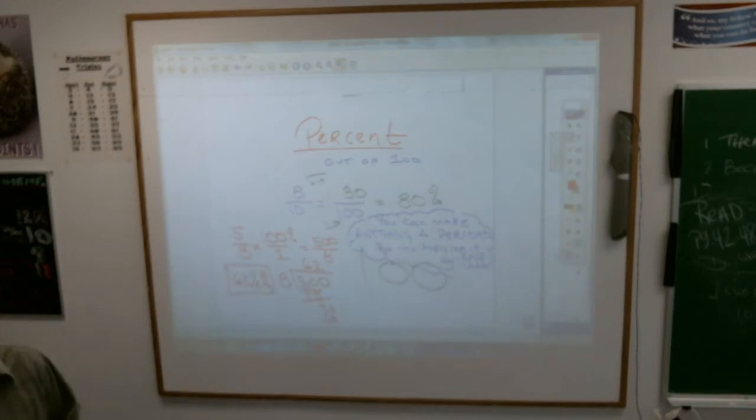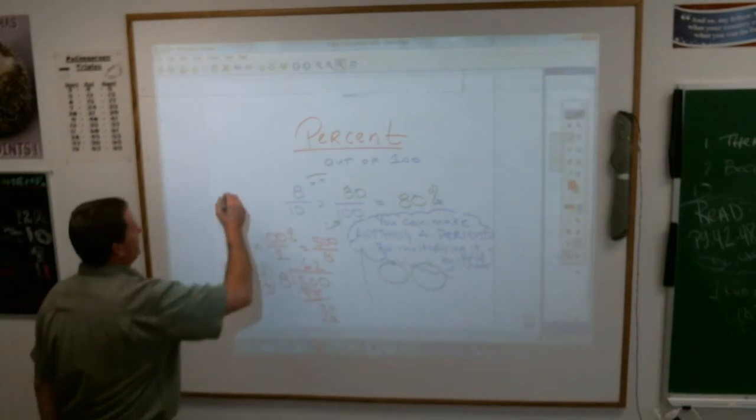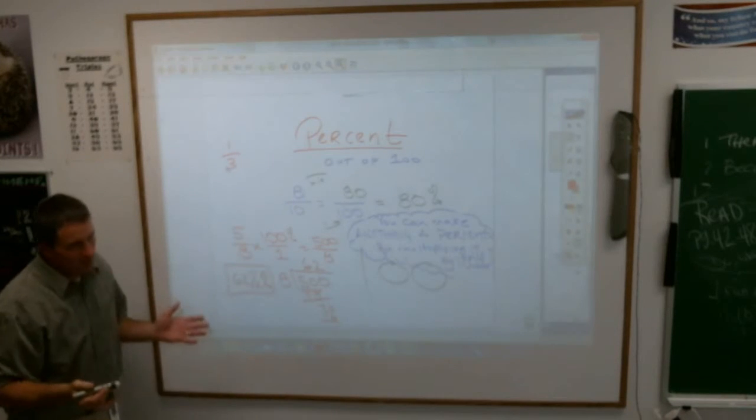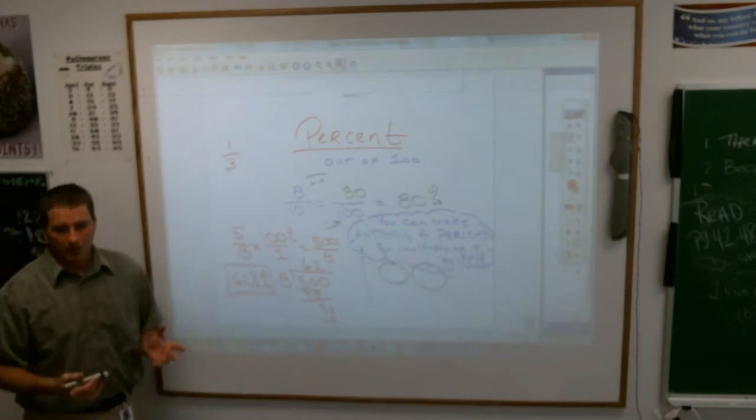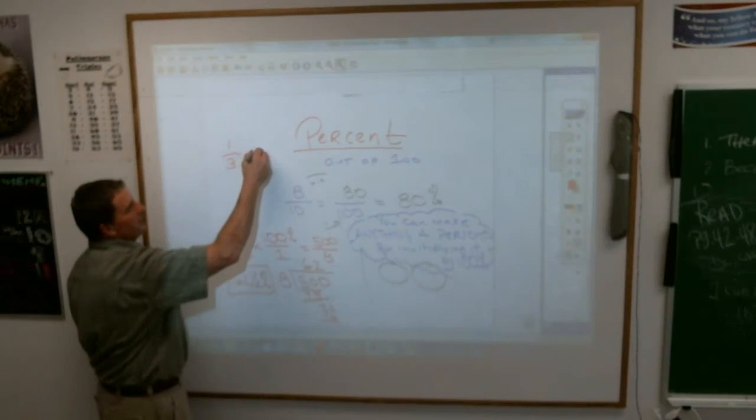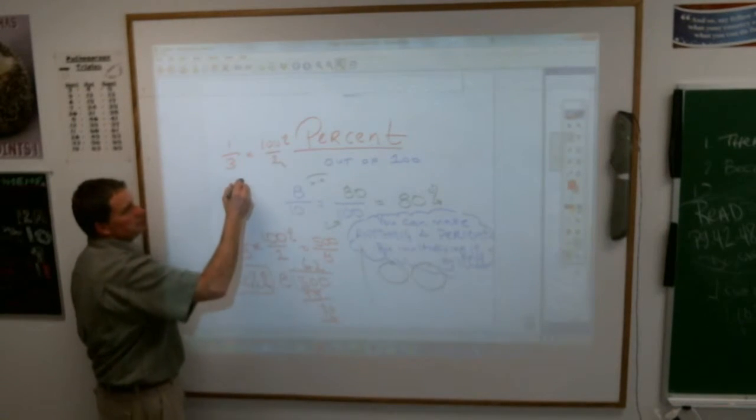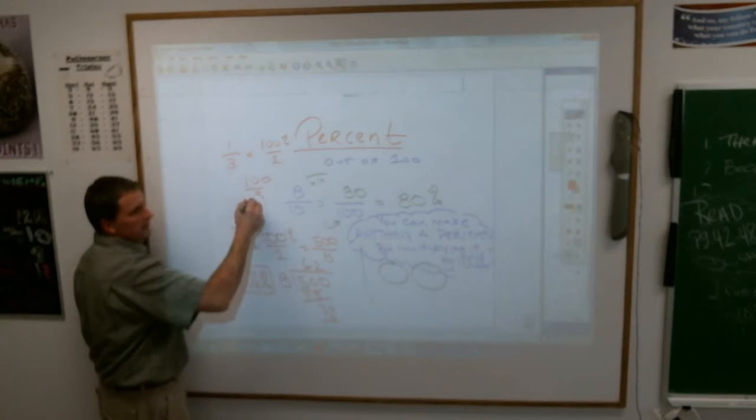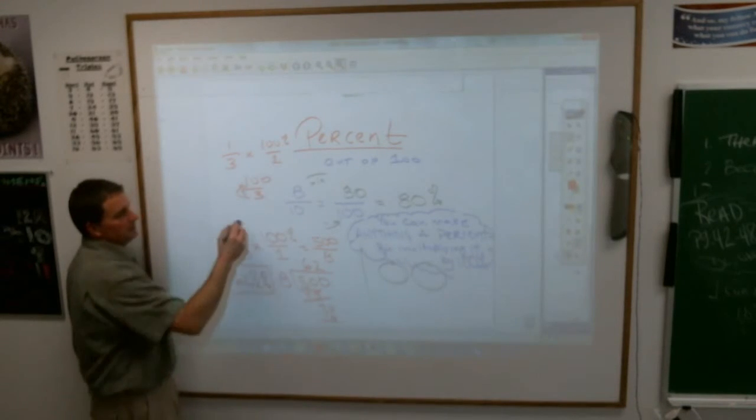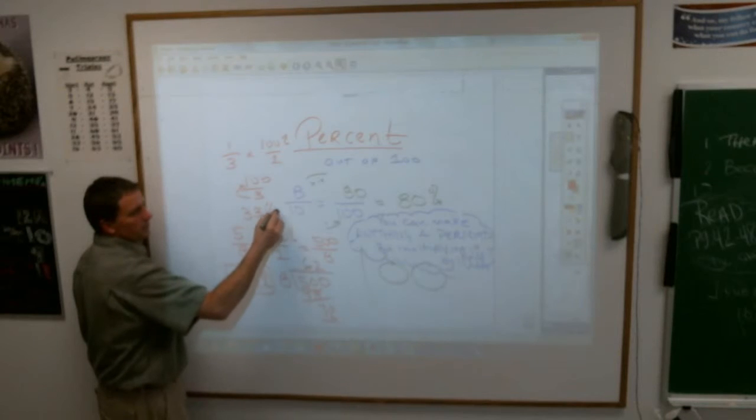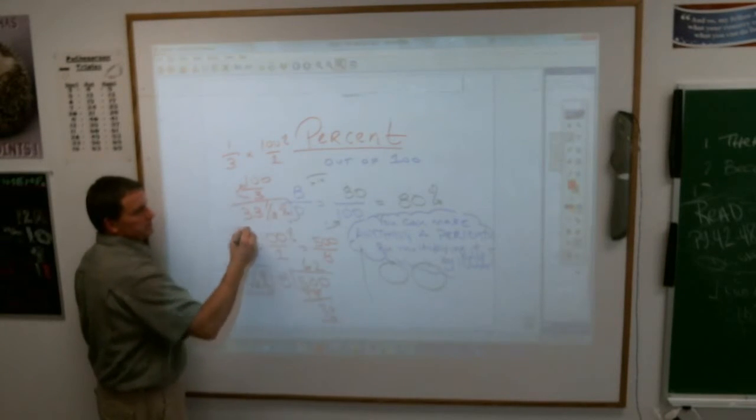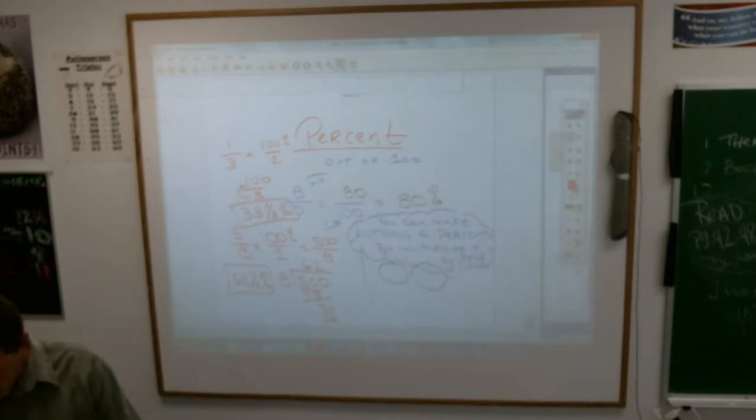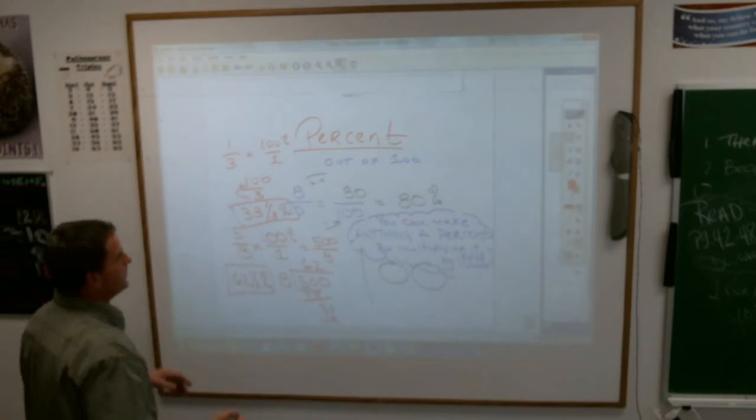So you can always, no matter what it is, just like 1 third as a fraction or as a percent, you probably know what it is. But if you didn't know what it is, you would just multiply it by 100%. And it means you get 100 divided by 3. How many times is 3 going to 100? 33 and 1 third percent.